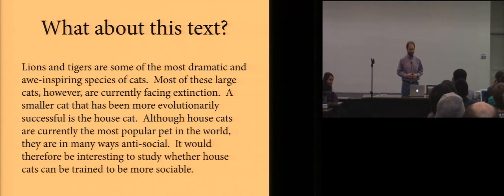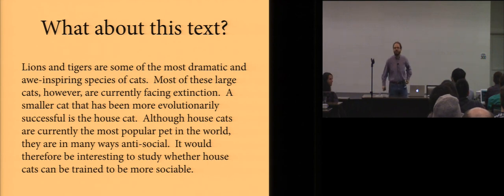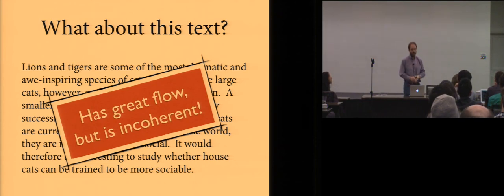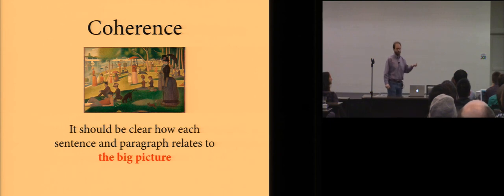Lions and tigers are some of the most dramatic and awe-inspiring species of cats. Most of these large cats, however, are currently facing extinction. A smaller cat that has been more evolutionarily successful is the house cat. Although house cats are currently the most popular pet in the world, they are, in many ways, antisocial. It would, therefore, be interesting to study whether house cats can be trained to be more sociable. So, does anyone have any feelings about this paragraph? This text is totally incoherent. The beginning of the paragraph and the end of the paragraph are on different planets. That said, it has great flow. It perfectly satisfies the old-to-new principle. So, this means you need some other kind of principle.